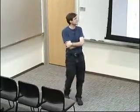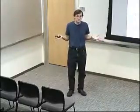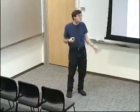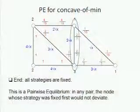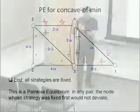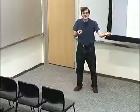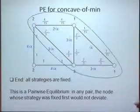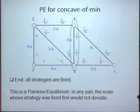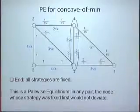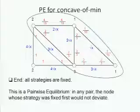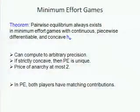The result is a pairwise equilibrium. Here's why: suppose a pair would rather deviate. The node that was fixed first would not deviate, because due to the lemma it's already getting the best utility it could if it controlled all remaining nodes — certainly better than if it controlled just the two nodes in the pair. So it never wants to deviate. That's why pairwise equilibrium always exists.